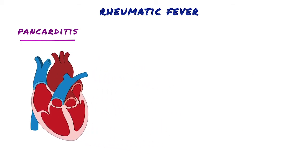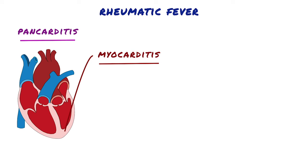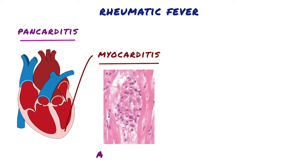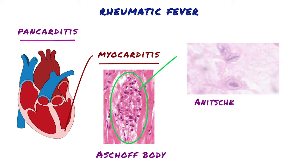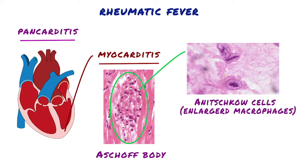Next is myocarditis, inflammation of the myocardium, or heart muscle. The myocardial inflammatory lesions, called Aschoff bodies, are pathognomonic for rheumatic fever. These are collections of lymphocytes, primarily T-cells, scattered plasma cells, and plump activated macrophages called Anitschkow cells, associated with zones of fibrinoid necrosis. The Anitschkow cells have abundant cytoplasm and nuclei with chromatin that is centrally condensed into a slender, wavy ribbon — so-called caterpillar cells.